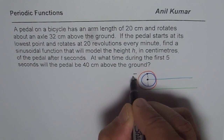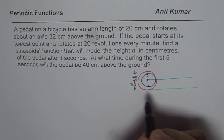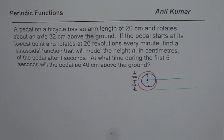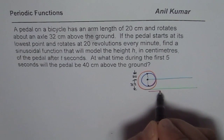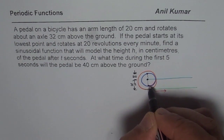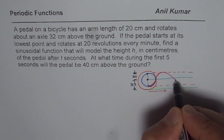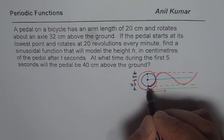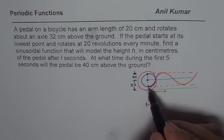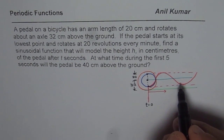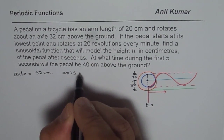As you rotate starting from the lowest point, a sine function or cosine graph could follow the path. The pedal goes like this, and as time moves forward, you get a graph where the maximum and minimum values correspond to the pedal's highest and lowest positions. This sine wave starts with the minimum at time t equals 0. We need to find the equation of this wave. The axle at 32 centimeters forms the axis for our sine wave, so the axis d is 32.